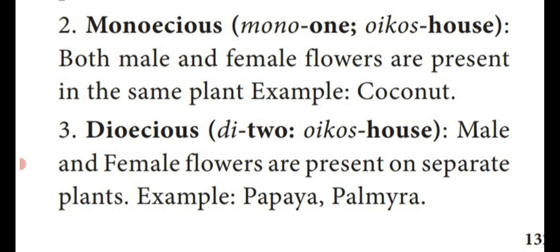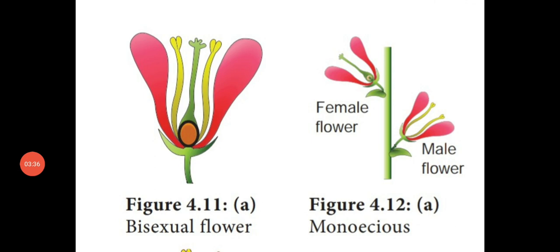Other examples include papaya. Dear students, see the diagram. The first one is the bisexual flower — a single flower which contains both male sex organ and female sex organ. That flower is known as bisexual, meaning two sex organs are present in the single flower. Second one is monoecious — in the diagram, the plant axis or stem has two different flowers present on the same plant. Mono means single, and oecious means house — that is said to be monoecious.